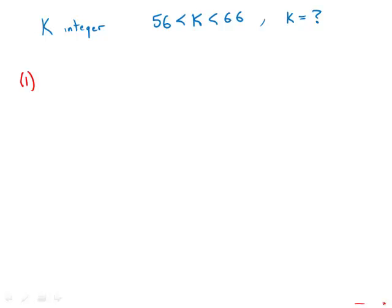So what are the possible odd numbers? It could be 57, 59, 61, 63, or 65. Those are all possible values of k between 56 and 66.